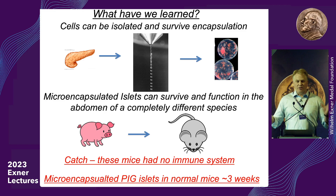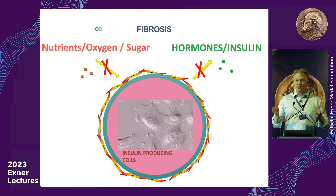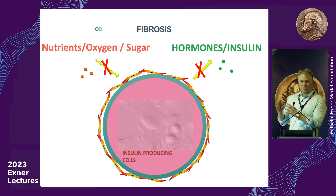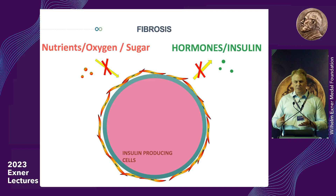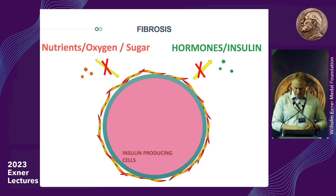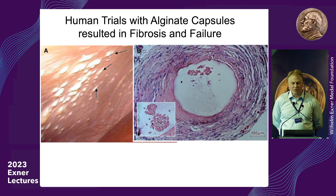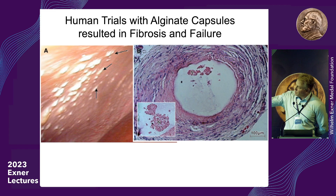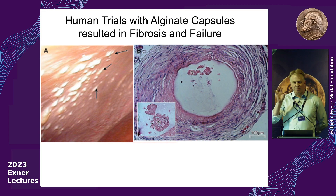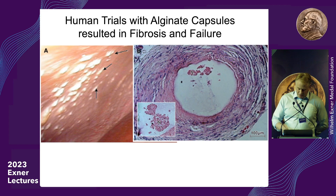Our immune systems are smart. If immune cells can't attack and clear something, they'll wall it off in scar tissue — a process called fibrosis. In the case of this artificial pancreas, a layer of collagenous scar tissue wraps around the cells and starves them to death, and the device fails within a few weeks. Early studies in humans with these capsules showed exactly this — devices placed in the abdominal cavity became embedded in the wall, covered in scar tissue, with dead cells inside.